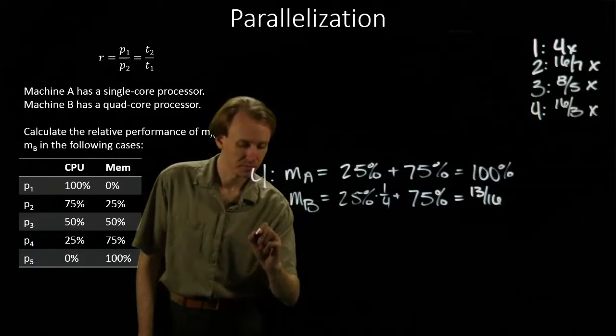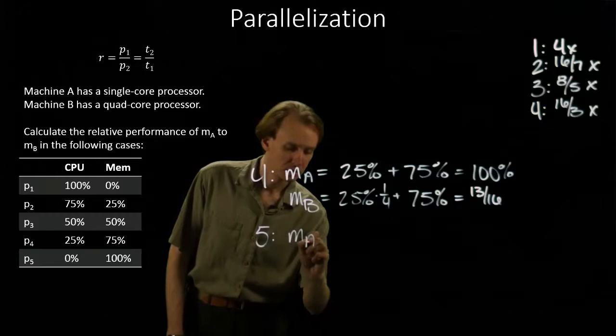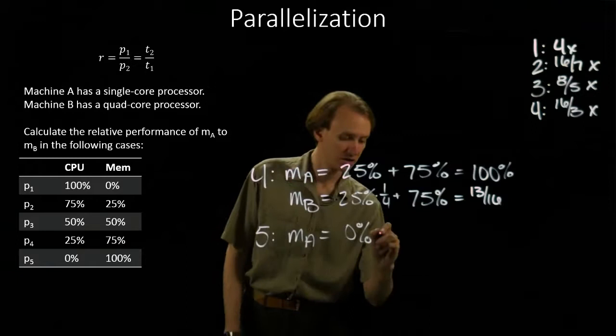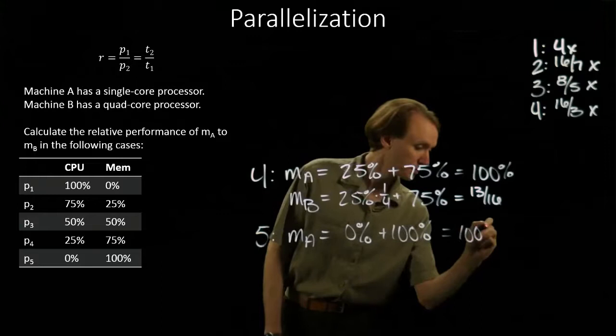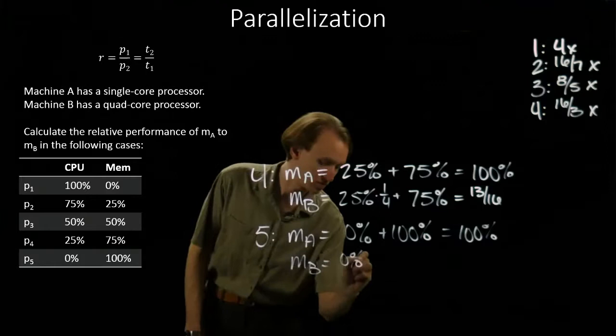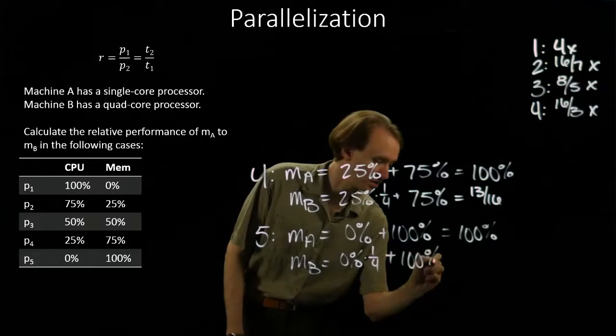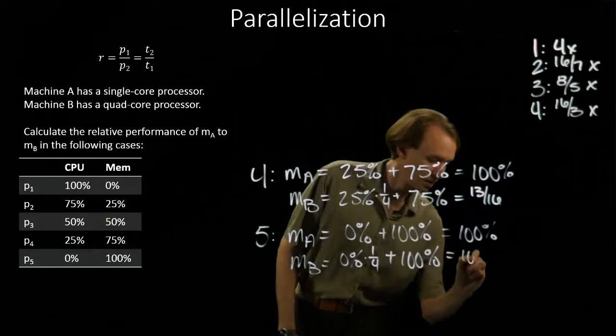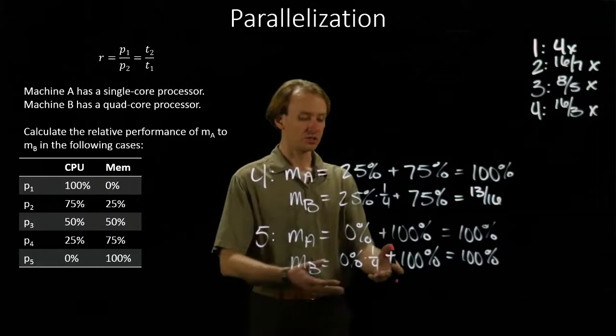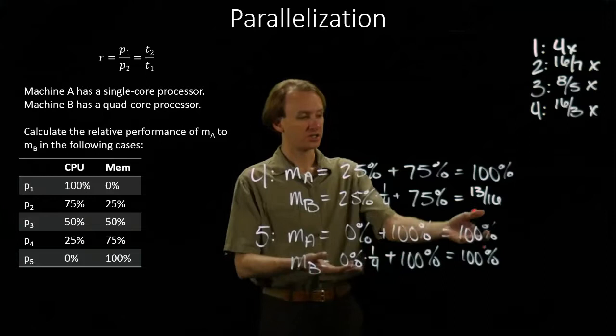Lastly, for number five, Machine A spends none of its time running CPU instructions and all of its time running memory instructions. Where Machine B runs that same zero percent of CPU instructions, but runs them in one-fourth as much time, and spends the remaining hundred percent of its time running the memory instructions, and ends up taking just as much time as Machine A did. Once none of our instructions are affected by parallelization, then the multi-core processor doesn't actually affect the execution time.